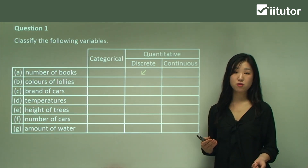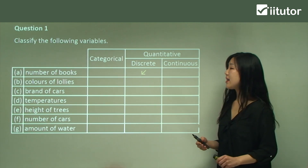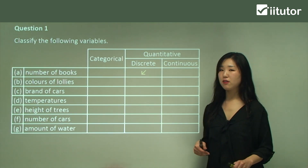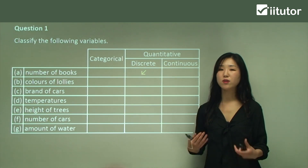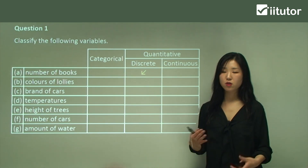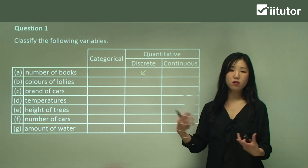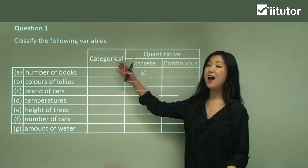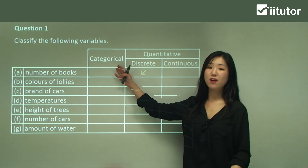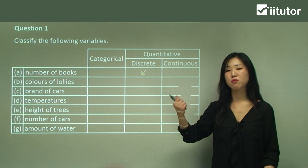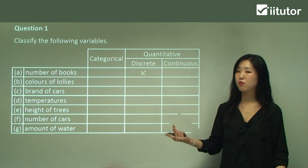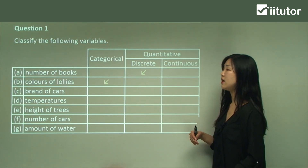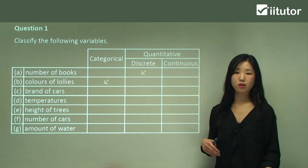If it's countable, it's discrete. Now, colors of lollies. Colors of lollies is not a quantity — color is not defined by a quantity. Rather, it's a category. Colors can be red, blue, green — we can categorize them into color of a lolly. So it's categorical.